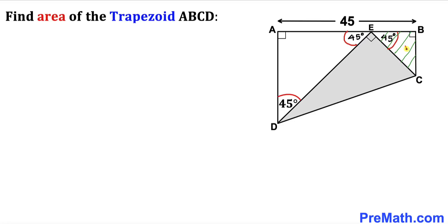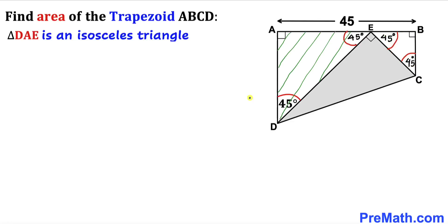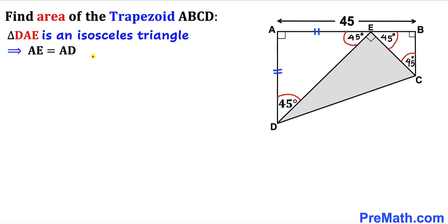Now let's focus on right triangle EBC. We know this is a 90-degree angle and the other known angle is 45 degrees, so the third angle must also be 45 degrees. Since triangles DAE has two congruent angles, it is isosceles, so side AE equals side DE. We'll call this Equation 1.